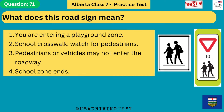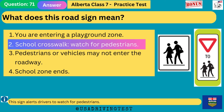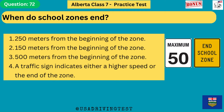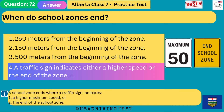What does this road sign mean? 1. You are entering a playground zone. 2. School crosswalk — watch for pedestrians. 3. Pedestrians or vehicles may not enter the roadway. 4. School zone ends. The answer is 2: school crosswalk, watch for pedestrians. This sign alerts drivers to watch for pedestrians. A school zone ends where a traffic sign indicates a higher maximum speed or the end of the school zone.